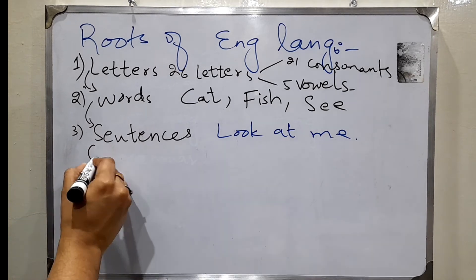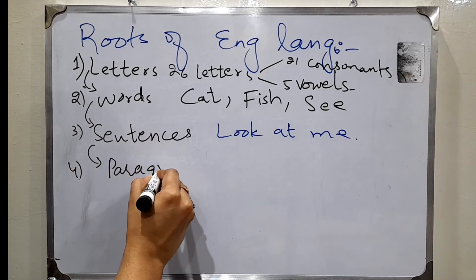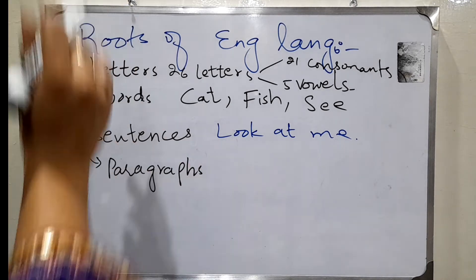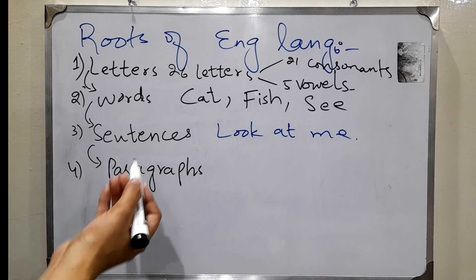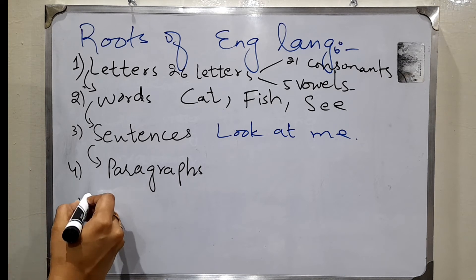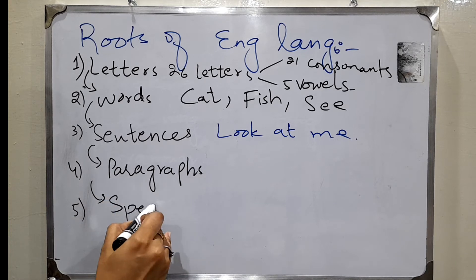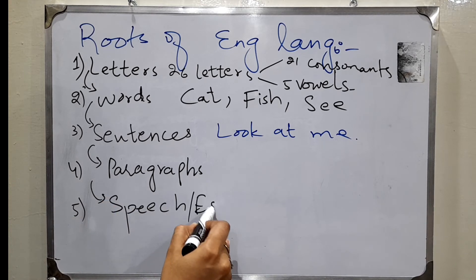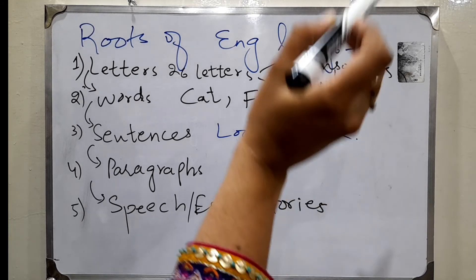With the help of sentences we will make paragraphs, which is the fourth part. Paragraphs consist of two, three, four, or five sentences — it depends on what you want to write. Number 5: with the help of paragraphs we can write long speeches, essays, stories, and so on.